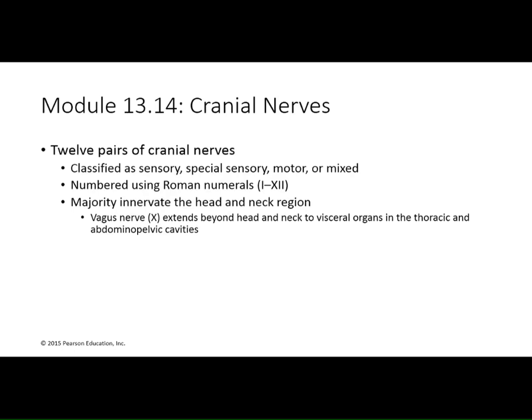One of your favorite topics — cranial nerves. It seems like they're never going away, so you might as well learn them. There are 12 pairs of cranial nerves coming off the brain. They control all sorts of things: special senses like vision, hearing, taste, and smell; movement like turning your head, shrugging shoulders, and moving eyes; and motor functions. We use Roman numerals 1 through 12. These cranial nerves are either purely sensory, purely motor, or mixed — doing both motor and sensory functions.